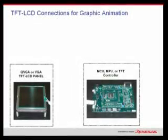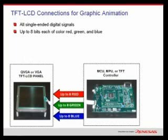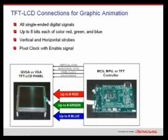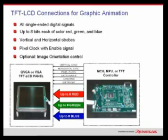First, I'll describe to you the simple connections between a color TFT panel and its controller. Since we're talking about graphic animation and full motion video, the connections to the panel are all single-ended digital signals, not high-speed differential signals. These panels typically receive up to 8 bits each of the colors red, green, and blue, or RGB, and it's this combination that determines the color of each pixel. TFT panels must be refreshed continuously, managed by vertical and horizontal timing strobes as well as clocking signals. There are also optional signals to flip or invert the image. That's all there is to it — it's a very simple interface.